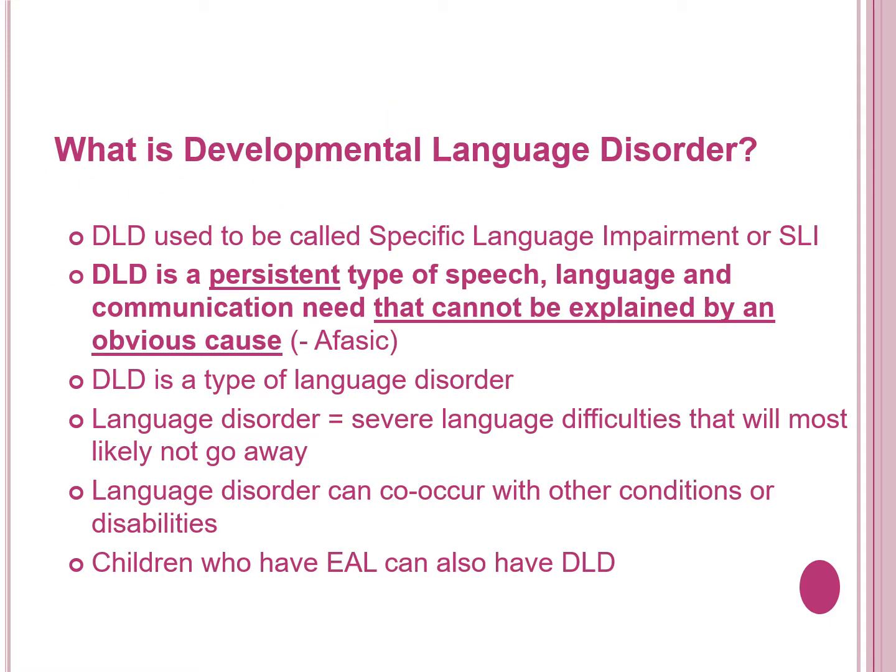Developmental Language Disorder used to be known as Specific Language Impairment, or SLI for short. Developmental Language Disorder is a persistent type of speech, language and communication need that cannot be explained by an obvious cause. DLD has been given different names in the past, which has sometimes made it confusing for professionals to talk about the condition and for children with DLD to get help. Experts have agreed that the term 'language disorder' should be used to describe severe language difficulties that are likely to persist — in other words, it is likely that they will continue to have difficulties in the affected areas of language.